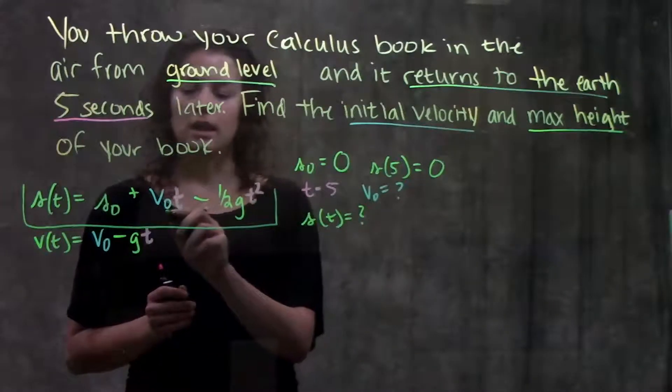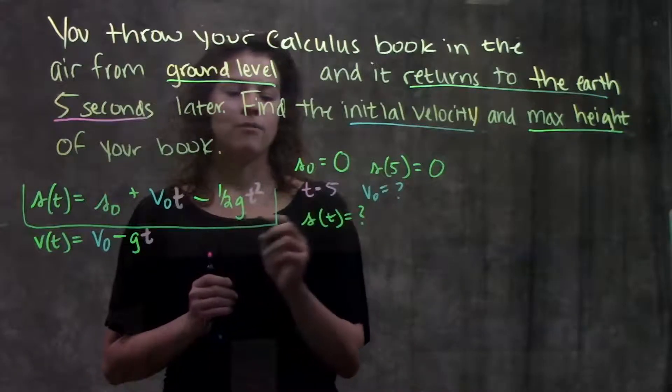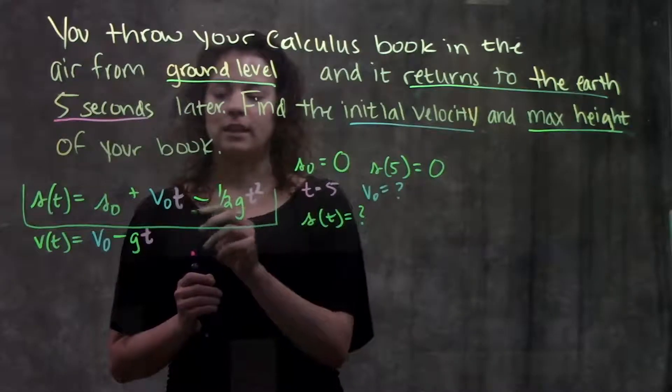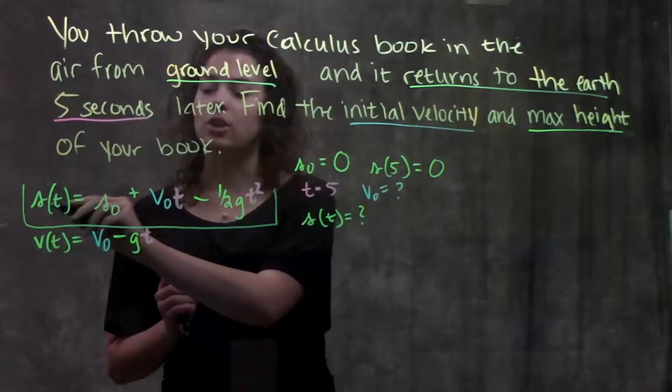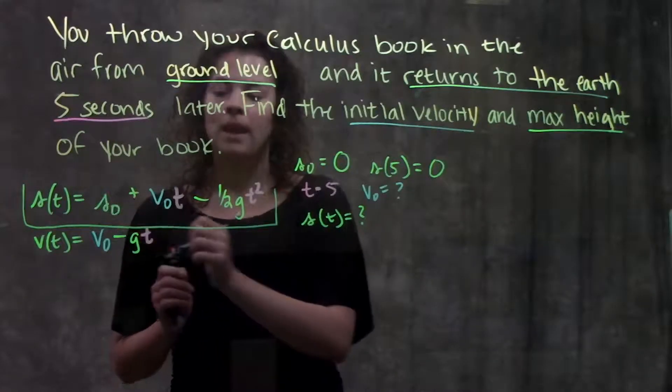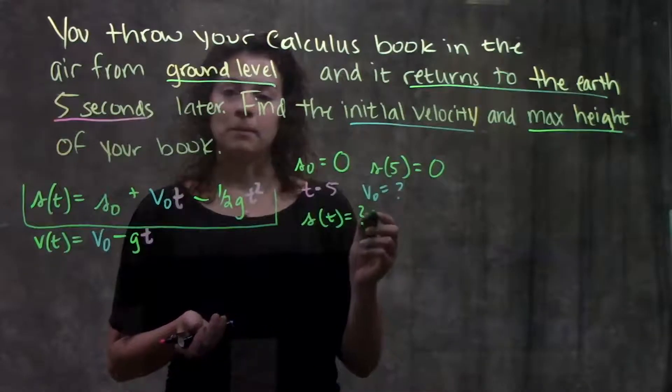So I'm looking for my v₀. I have my s₀ is zero and I also have a t and an s(t) that correspond that I could plug into here. I could plug in five for t and since I know my s(5) I have a value for this side of the function here as well. And that would leave me with just one unknown, my v₀, which means I'd be able to solve for this variable.